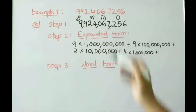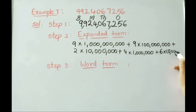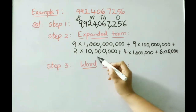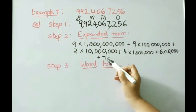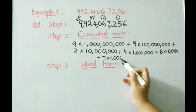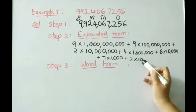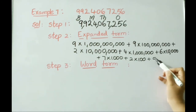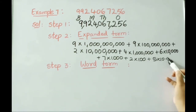Continuing the expanded form: 9 × 100,000,000 (hundred millions); next, 2 × 10,000,000 (ten millions); 4 × 1,000,000 (millions); 6 × 10,000 (ten thousands); 7 × 1,000 (thousands); 2 × 100 (hundreds); 5 × 10 (tens); 6 × 1 (ones).